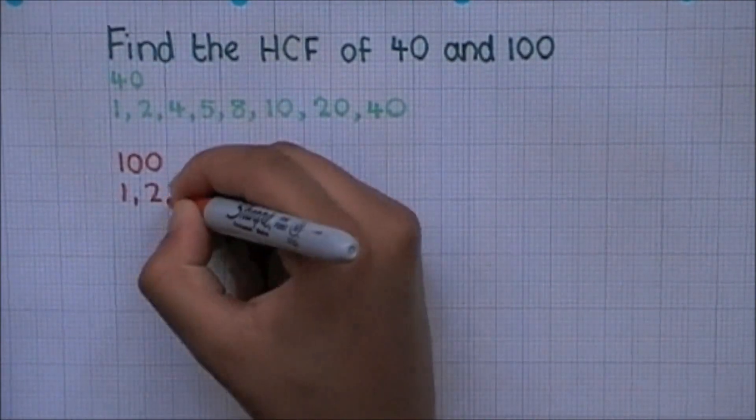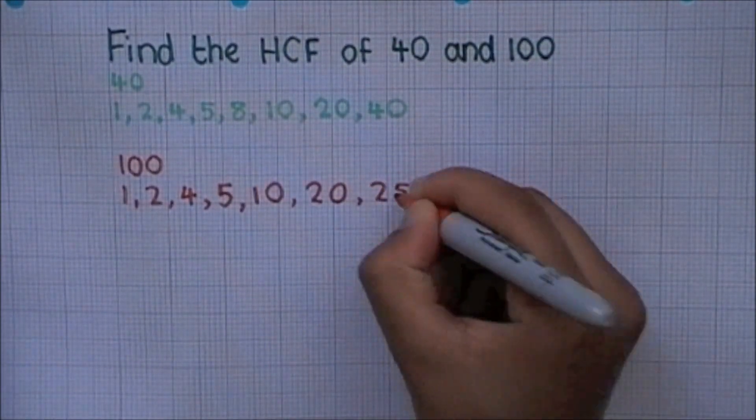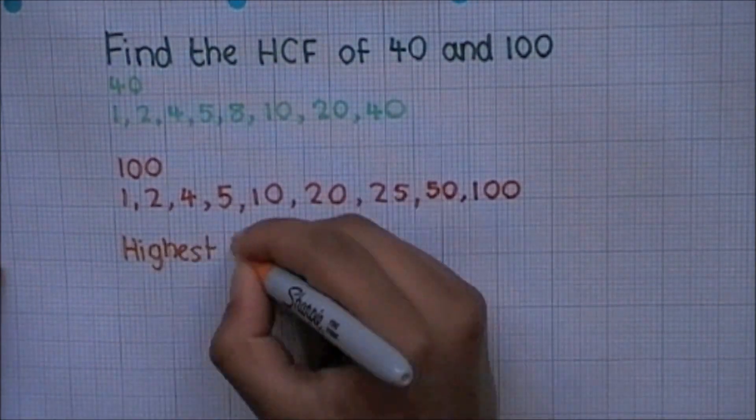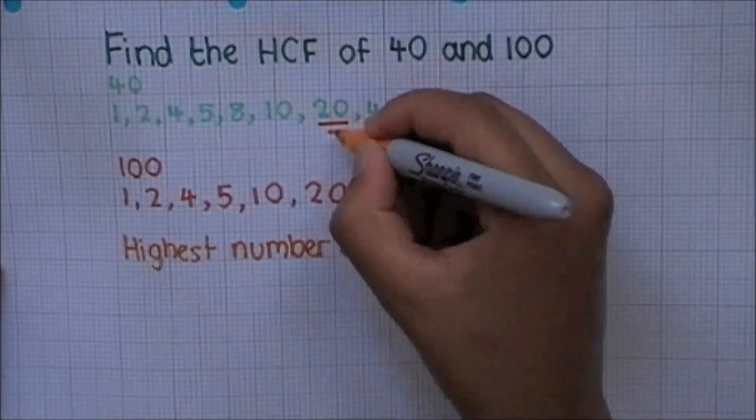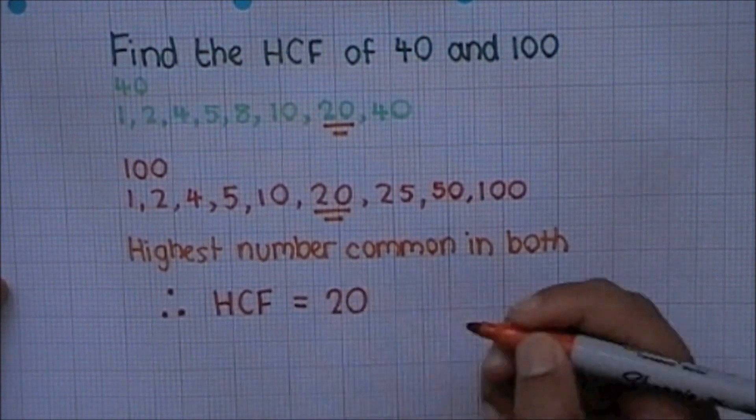Then do the same for 100. 1, 2, 4, 5, 10, 20, 25, 50, 100. The highest number that is common in both cases is 20. Therefore, the HCF must be 20.